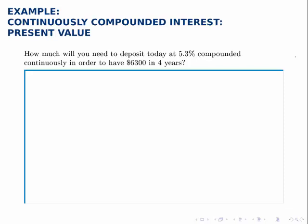This example deals with an account that has continuously compounded interest, but in this example we are given the future value that we want to have in four years and asked what present value we need to hit that goal.